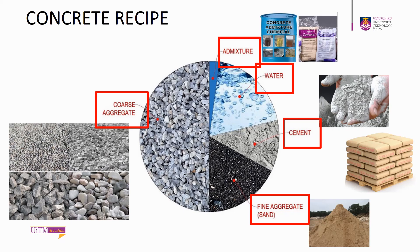Cement, usually in powder form, acts as a binding agent when mixed with water and aggregates. Cement fills the void between fine and coarse aggregate particles to form a compact mass. There are many types of Portland cement to suit different construction purposes. The commonly used type is ordinary Portland cement.